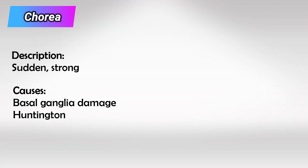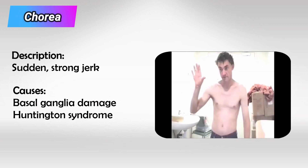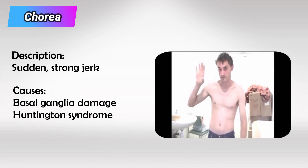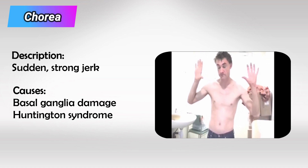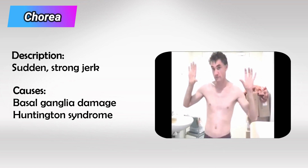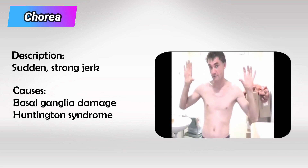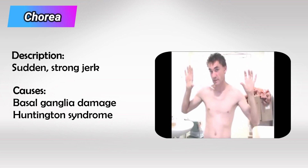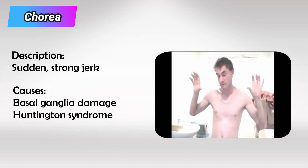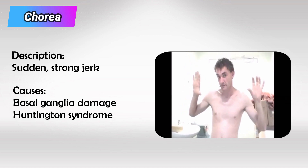Starting with chorea — this is a sudden, strong, jerk-like movement that can be best described as someone throwing something away. We see this in basal ganglia disorders and Huntington's syndrome.